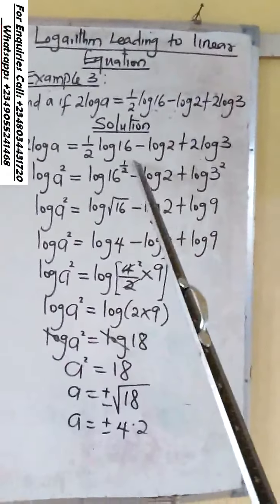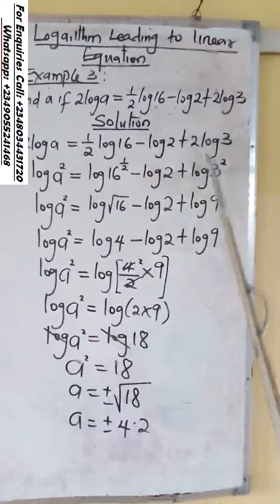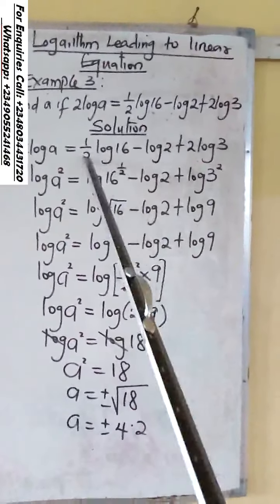In the second log, there's 1 over 2 at the front. Remove it. It will be 16 raised to power the value, which is half.